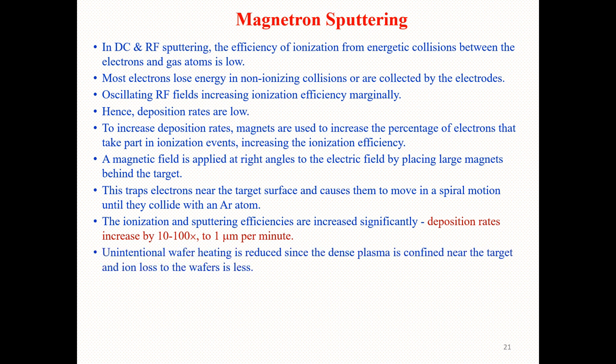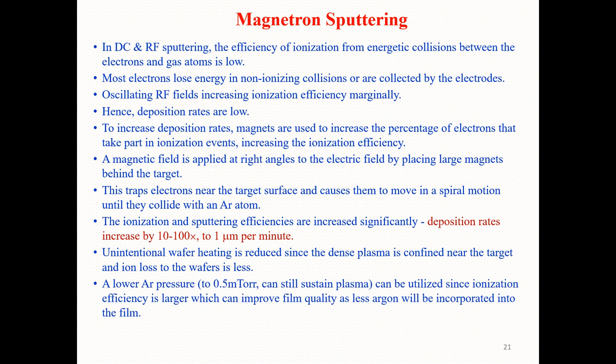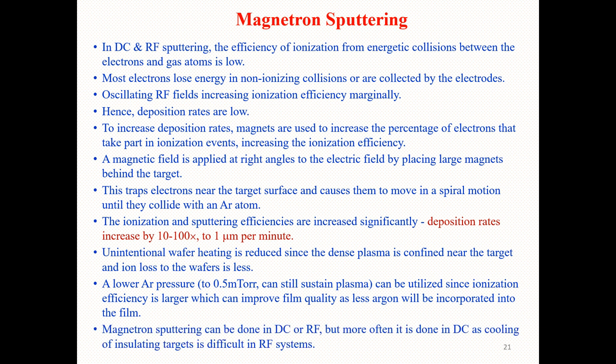Unintentional substrate heating is reduced because the dense plasma is confined near the target and ion loss to the substrate is less. Magnetron sputtering at lower argon pressures — as low as 0.5 millitorr — can still sustain the plasma. Since ionization efficiency is larger, this can improve film quality as less argon will be incorporated into the films.